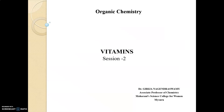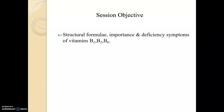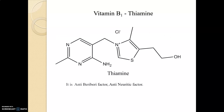Dear students, this is my second session of the vitamins chapter. In the previous session we discussed the definition and classification of vitamins. In this session I'll go through structural formulae, importance, and deficiency symptoms of vitamins B1, B2, and B6. This is vitamin B1, also called thiamine. This is the structure. It is the anti-beriberi factor and anti-neuritic factor.